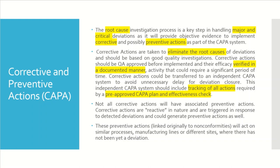Corrective actions are taken to eliminate the root cause of deviations and should be based on a good quality investigation. Corrective actions should be approved by QA before implementation, and their efficacy verified in a documented manner. These activities may require a significant period of time — you need to provide a timeline showing whether a two-week, three-week, one-month, or six-month period has any impact on your process, product, or safety. That requires assessment from a quality perspective.